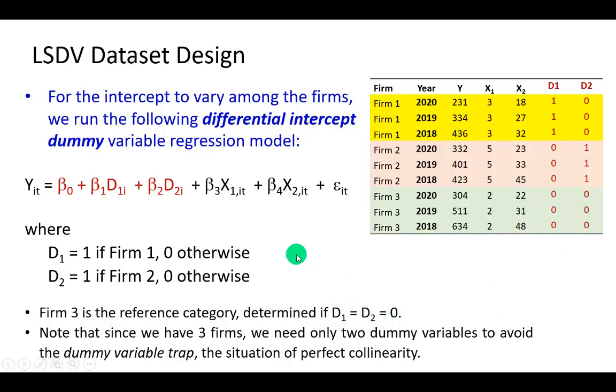You don't want to include D3 because if you do, you're going to run into the dummy variable trap and you don't want that. For three firms, you need only two dummy variables.